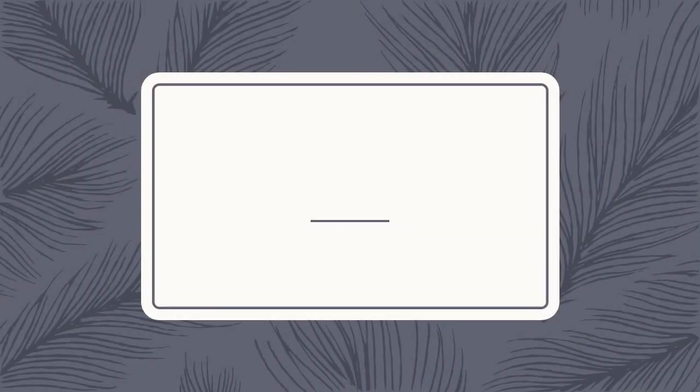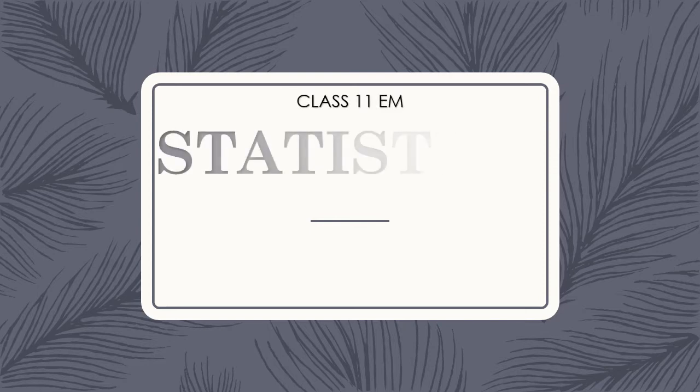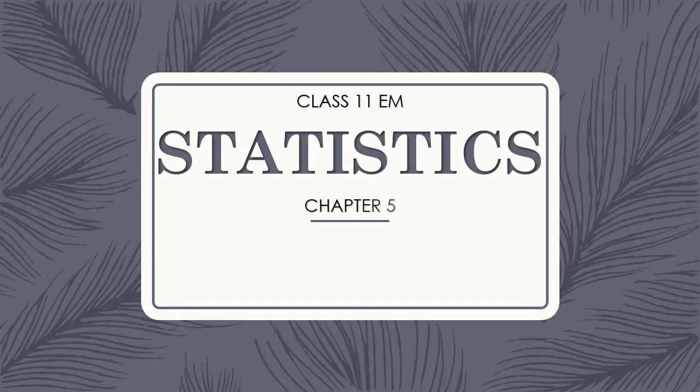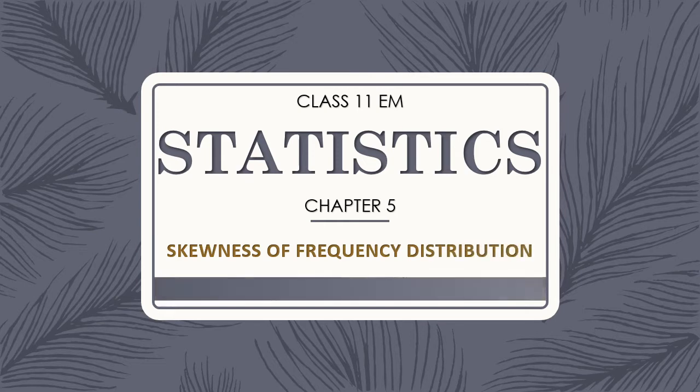Hello, dear students, welcome to the class of 11th English medium. The subject is Statistics, Chapter 5: Skewness of Frequency Distribution, brought to you by Vitan Sir. In my previous tutorial we studied about Carl Pearson's method of calculating skewness and its coefficient. We also started Exercise 5.1 and completed the first four questions. Now in this tutorial I am going to continue with Exercise 5.1 and complete the remaining three sums — question numbers 5, 6, and 7.